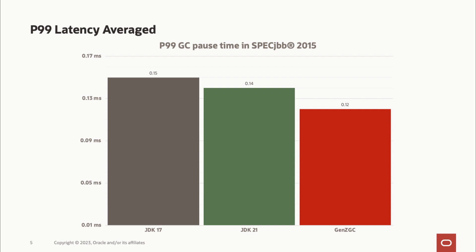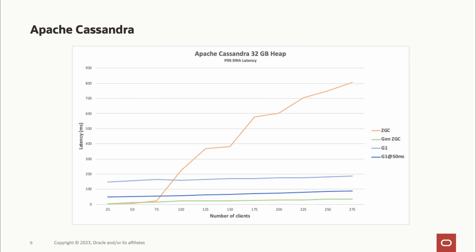Generational ZGC's biggest improvement over single-generational ZGC is that it's much better at avoiding allocation stalls — a situation where the allocation rate is so high that ZGC is unable to free up memory fast enough for new objects to be allocated. To see this issue, we switch to a use case of Apache Cassandra, which can experience this under heavy load. Looking at the 99.999th percentile (5-nines), we see where the allocation stall issue happens in single-generational ZGC. Up until 75 clients, the max pause time story between the two is more or less the same. However, beyond that, single-generational ZGC starts to experience allocation stalls causing max pause times to increase substantially, while Generational ZGC gives consistent pause times up through 275 concurrent clients. For more on allocation stalls in single-generational ZGC, check out Erik Österlund's JVM Language Summit talk on Generational ZGC.